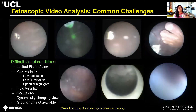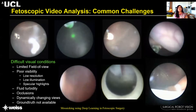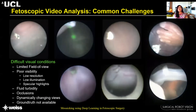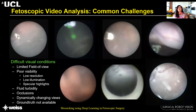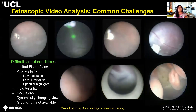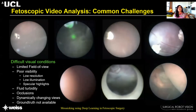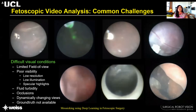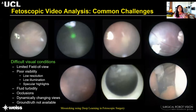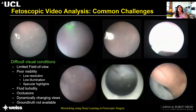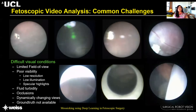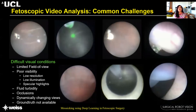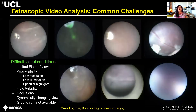Existing feature-based approaches tend to fail dramatically on this type of data. Fluid turbidity is another problem, and videos vary quite a lot from one patient to another and due to varying light sources. There can also be occlusions due to the presence of the fetus and the working channel port. Sometimes views can be dynamically changing, which can again result in failure of mosaicing algorithms. In the in-vivo setting, we currently have no ground truth available for validating our algorithms.